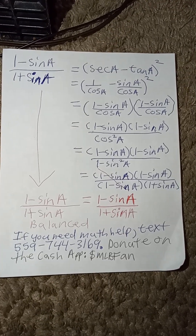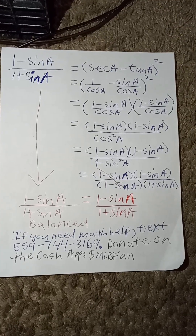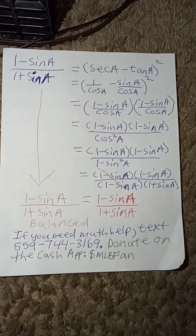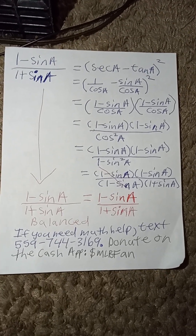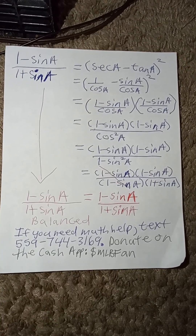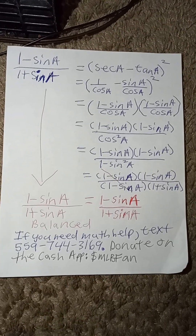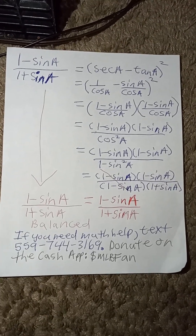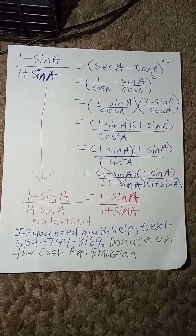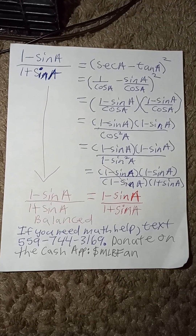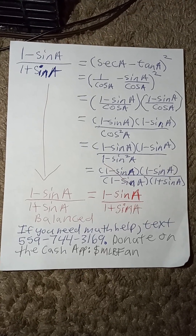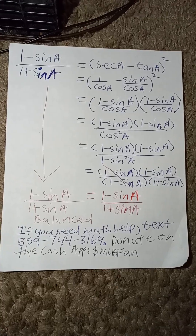So, the 1 minus sine a in the numerator and 1 minus sine a in the denominator cancel out. And we have 1 minus sine a divided by 1 plus sine a, which is equal to the original statement on the left-hand side. Now the statements are balanced. This is how you verify both sides of the equation to see whether or not each statement is a true statement within trigonometry, and therefore the statement has been verified and balanced.